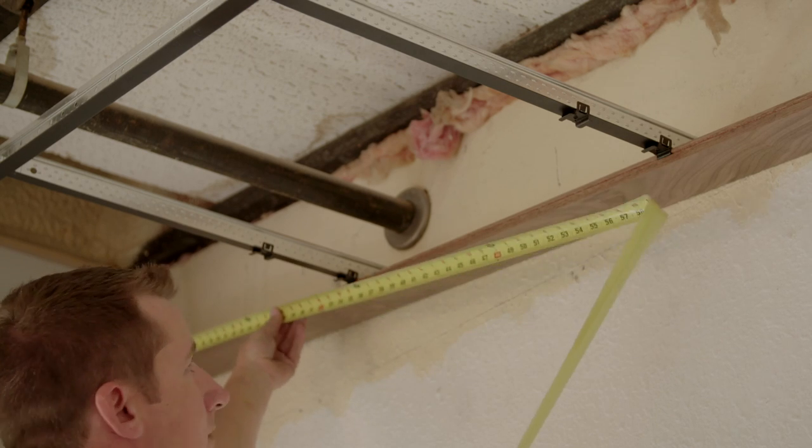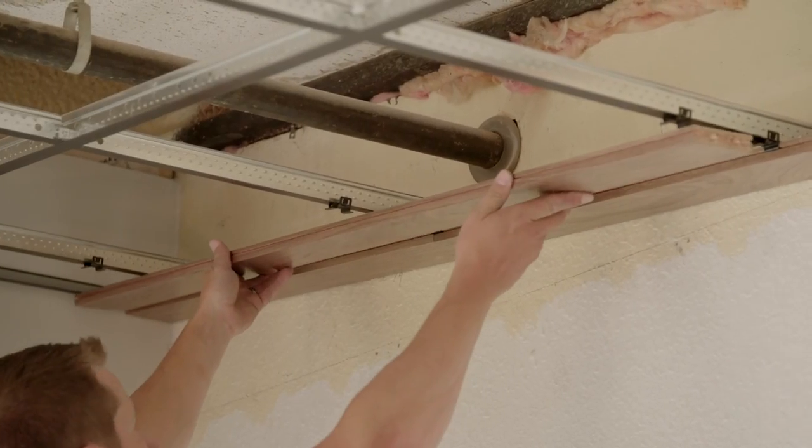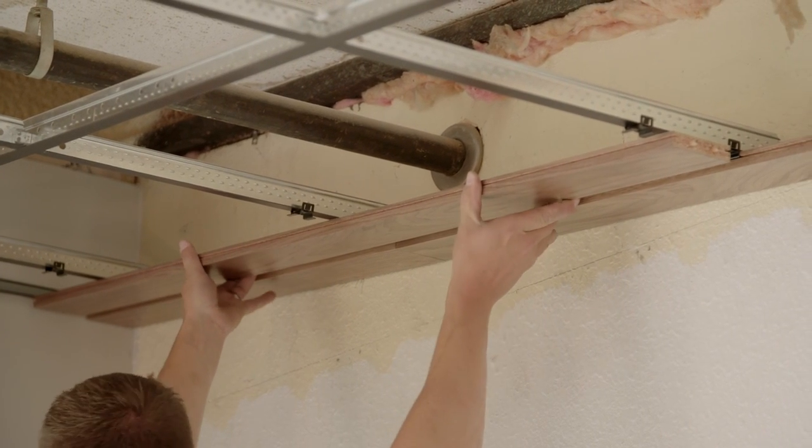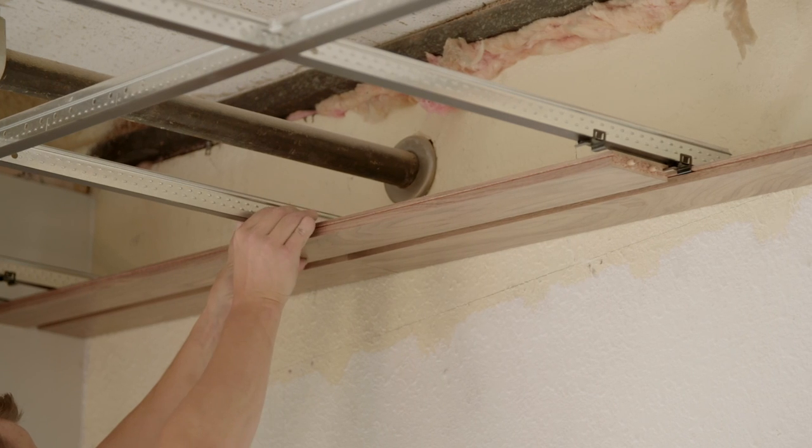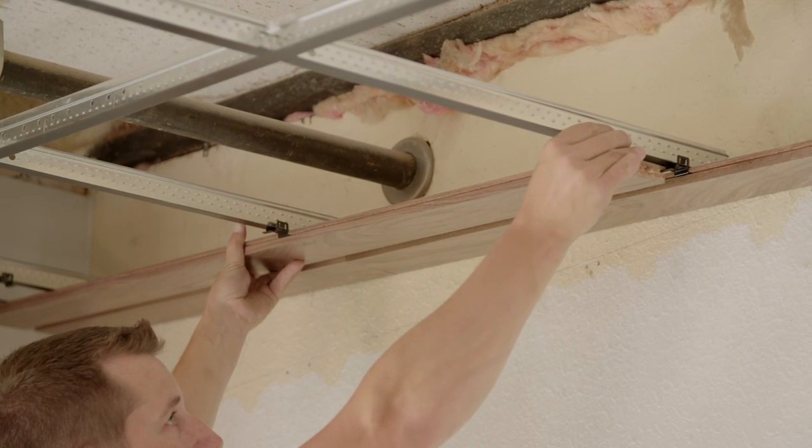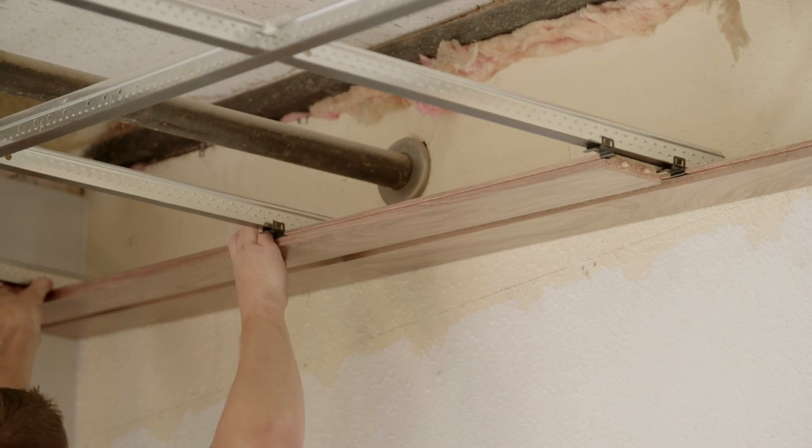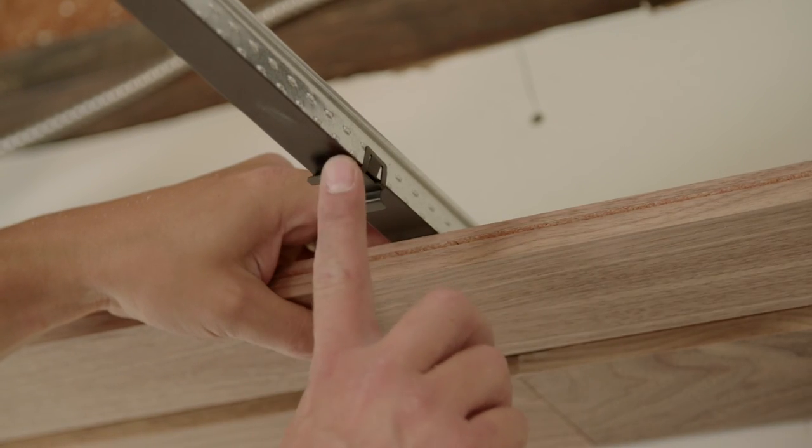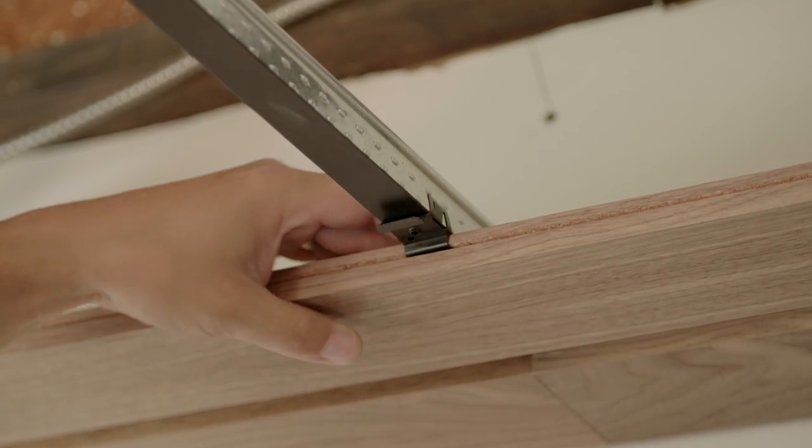Measure the first plank length to the center of the appropriate cross T. Cut the plank at the wall end and place it at the expansion gap. Slide the middle mounting clip against the plank. Check that the dowel end of the plank is centered in the cross T, and slide the remaining clips against the plank. Once the clip is tight against the plank, squeeze the top part inward to set the clip in position.